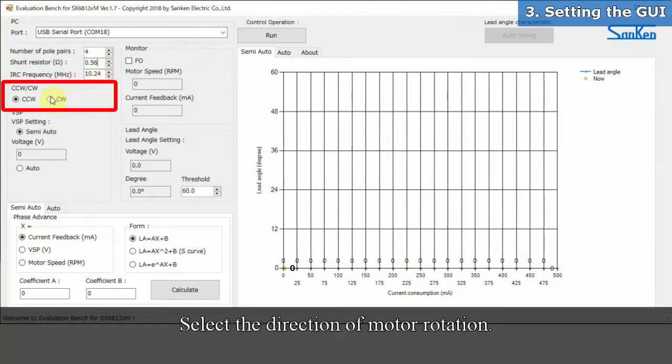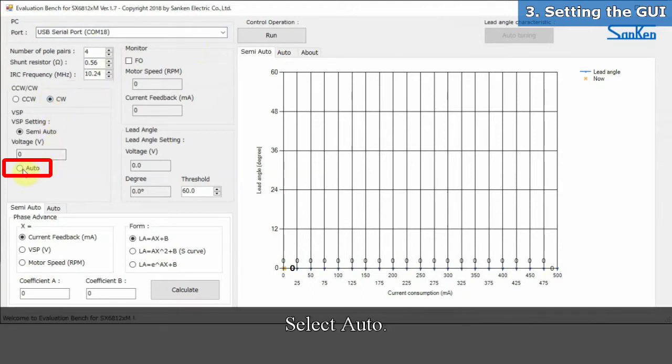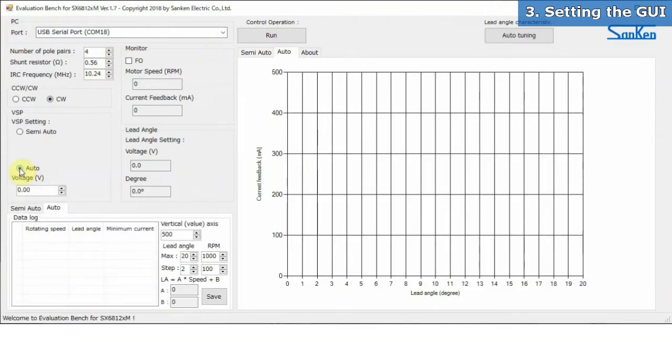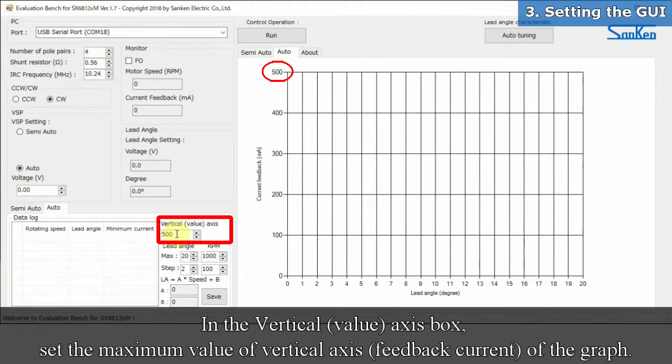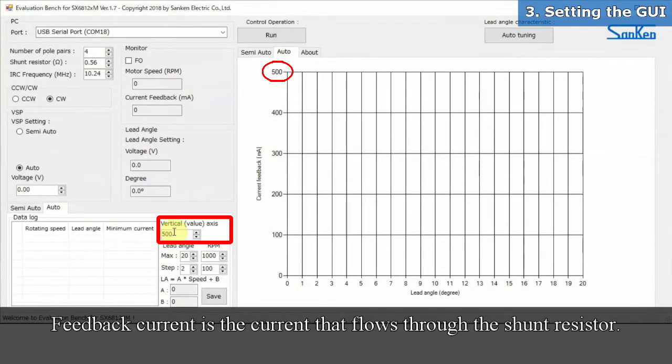Select the direction of motor rotation. Select auto. In the vertical axis box, set the maximum value of vertical axis of the graph. Feedback current is the current that flows through the shunt resistor.